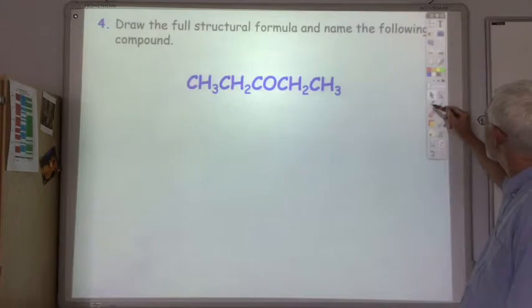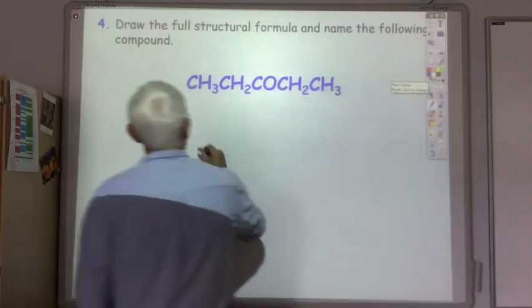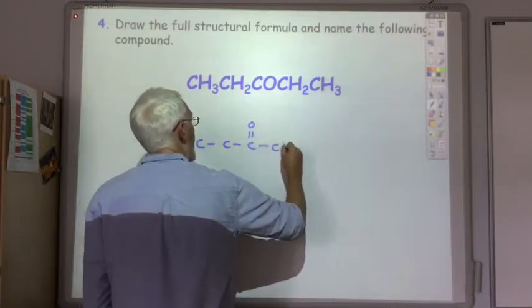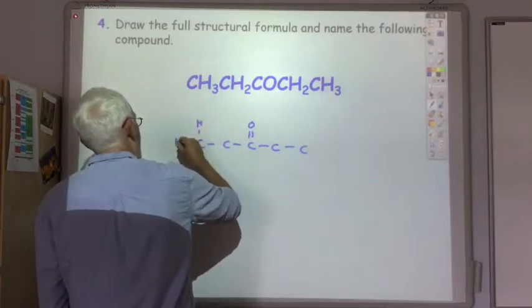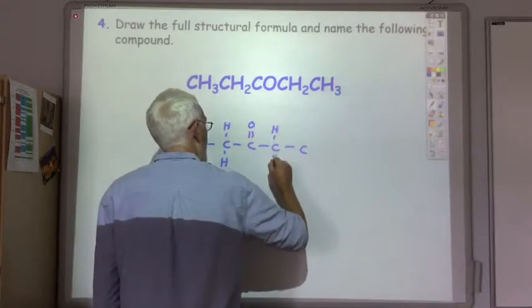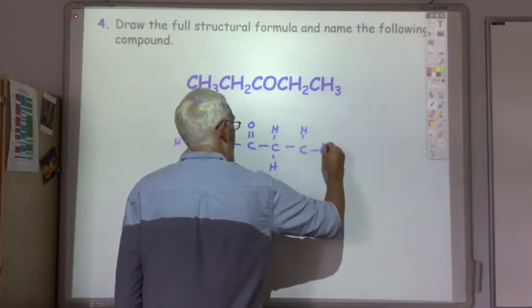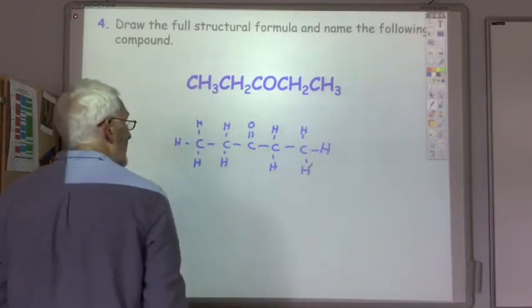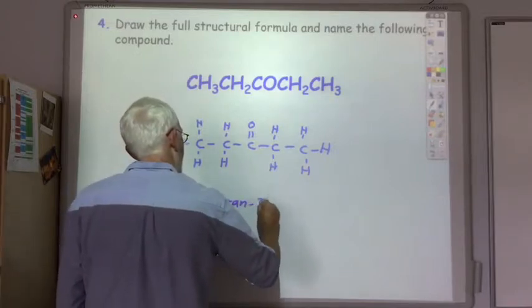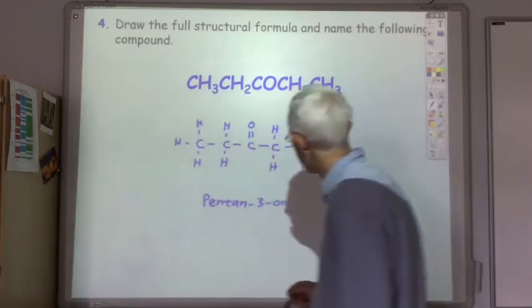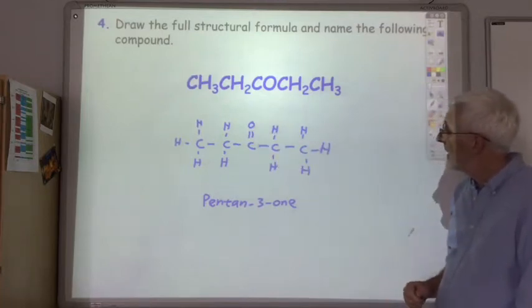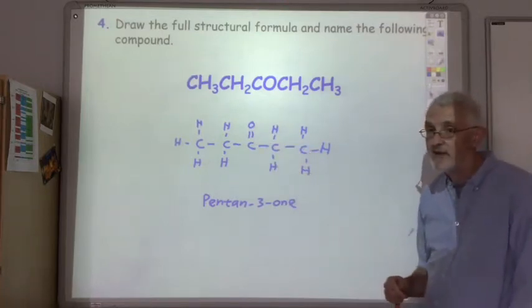Here's the fourth one for you. So this was a ketone, the C double bond O group, it was in the third position, so it was pentan-3-one.